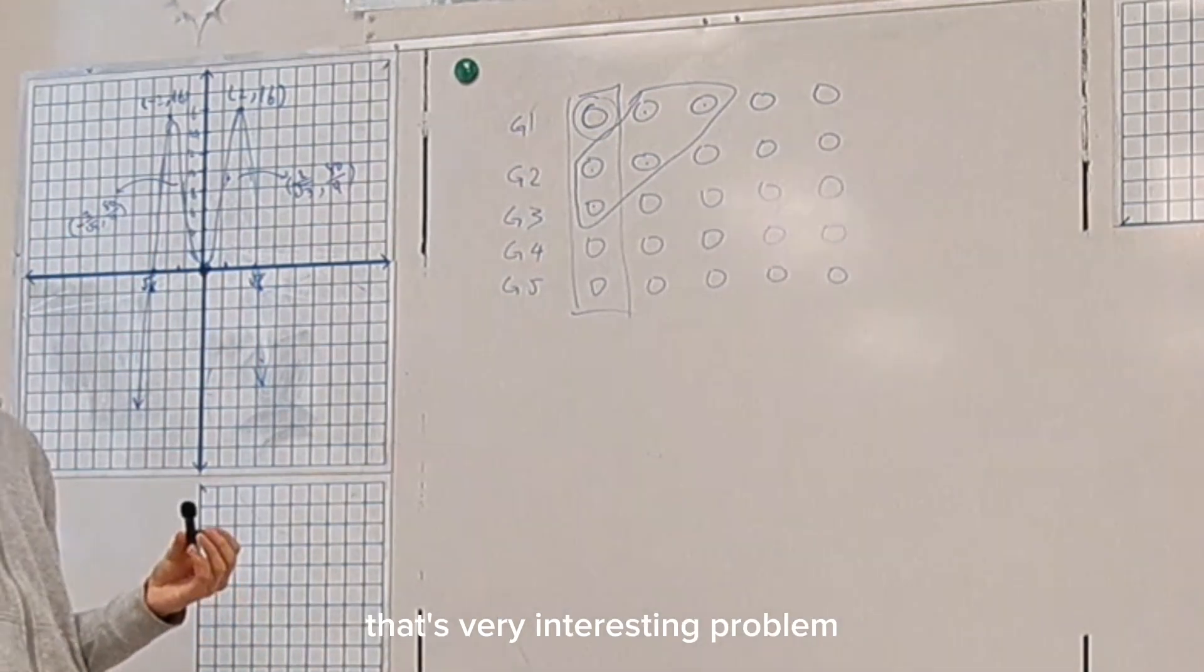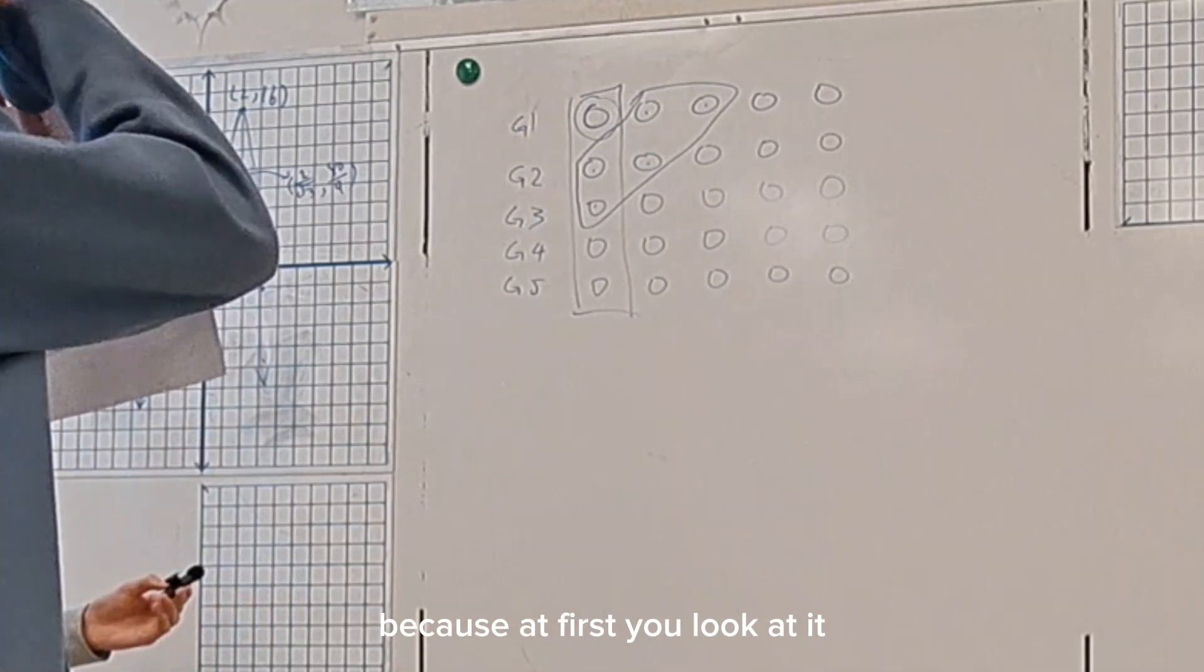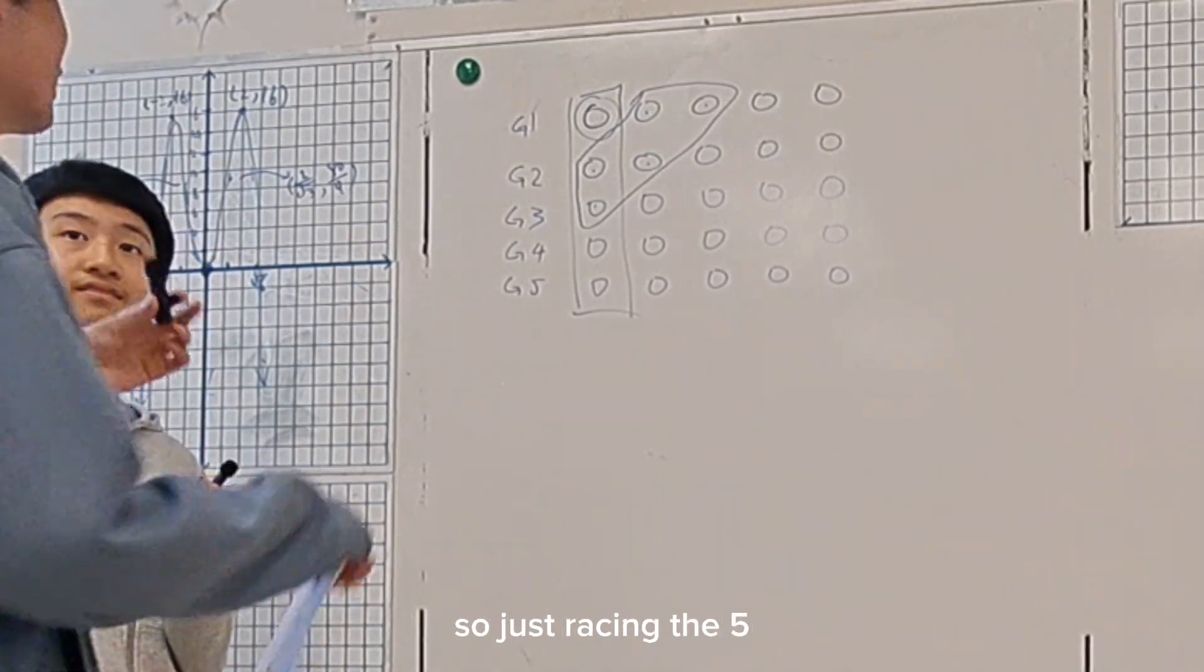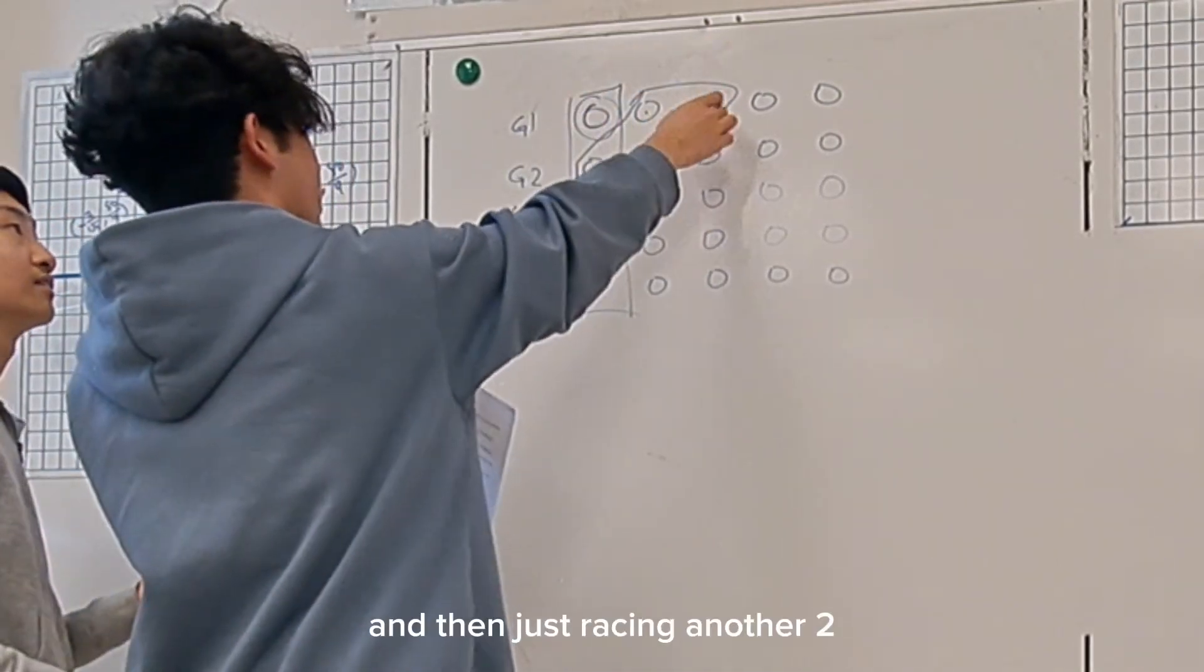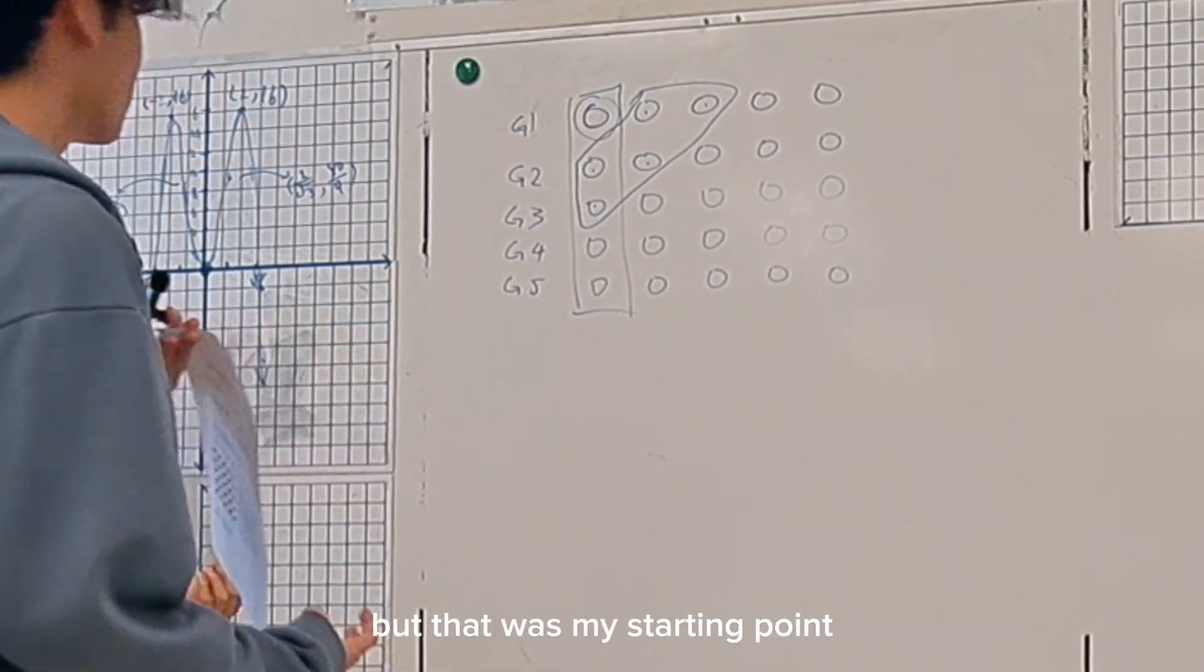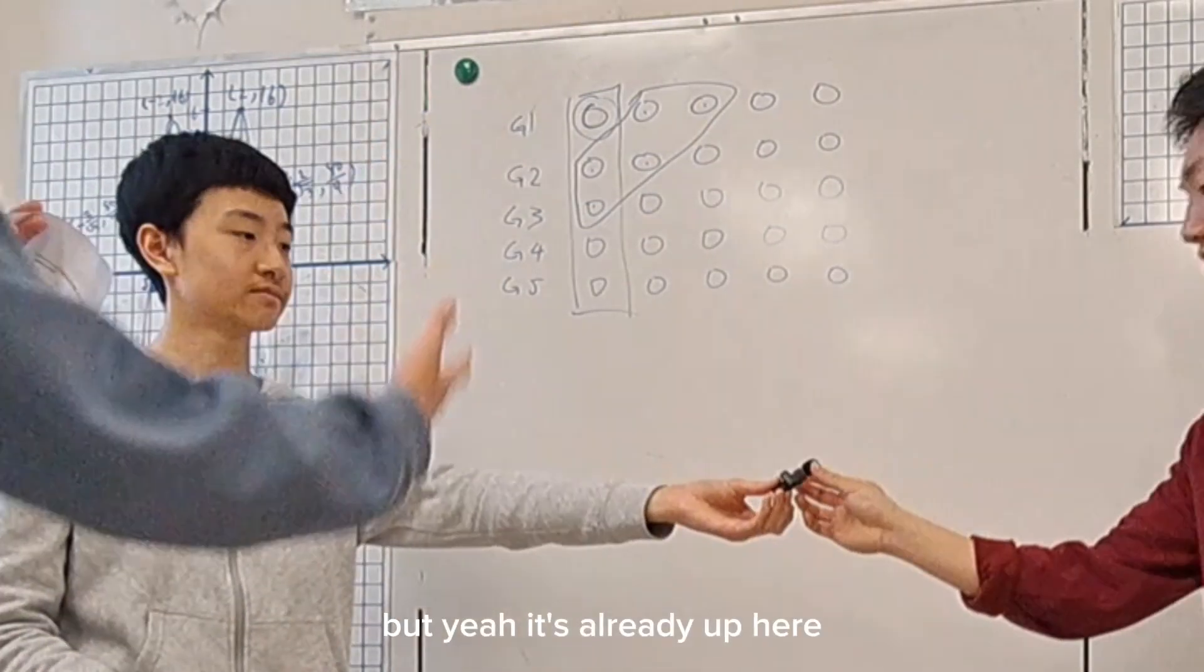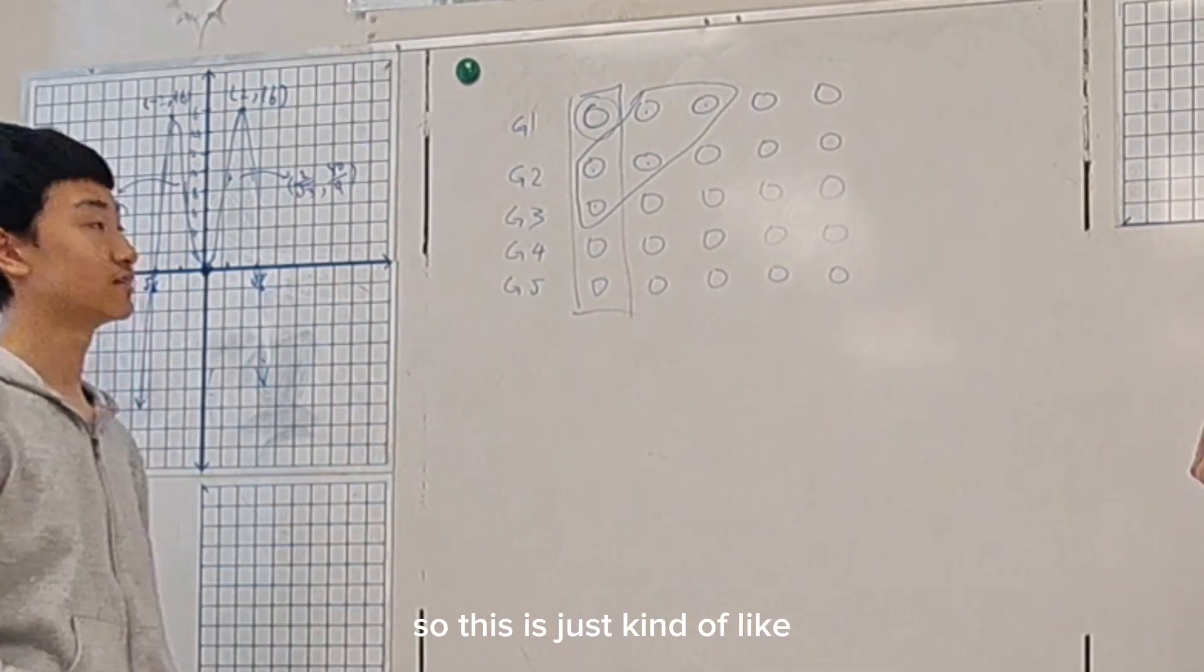I like this approach actually a lot because at first I thought about just brute forcing it—just racing the five, getting the three, and then just racing another two. But obviously I know that's not the right answer. That was my starting point and I was just trying to optimize it as much as I could. But yeah, it's already up here, so it's pretty well done. Yeah, so this is just kind of a walkthrough of how we would solve a math problem.